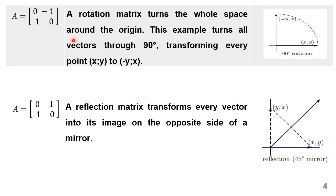A rotation matrix turns the whole space around the origin. For example, let's take the matrix defined as [[0, -1], [1, 0]]. When we multiply this with vector (x, y), we get the answer as (-y, x). Now, let us take the vector with value x equal to 2, y equal to 0. When I multiply this matrix with (2, 0), I get the answer as (0, 2). So this matrix turns all vectors by 90 degrees, transforming every point (x, y) to (-y, x).